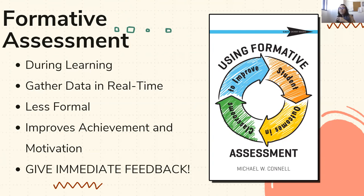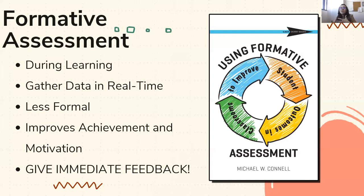If you say, 'Everybody, give me a thumbs up or thumbs down — are you understanding this lesson?' and half your class gives you a thumbs down, that's your data. You can immediately make decisions about how to continue. Seeing more than half the class with thumbs down tells you they're not ready to move on — you need to take a step back, go over the information again, give extra practice, or model the skill again. That's okay. Formative assessment tells you as their teacher: are we progressing, do we need to step back, or are we good to move forward?